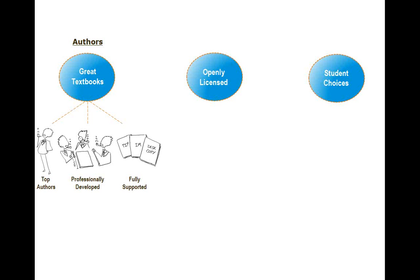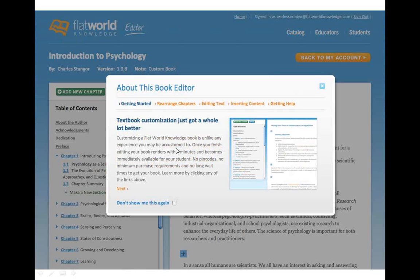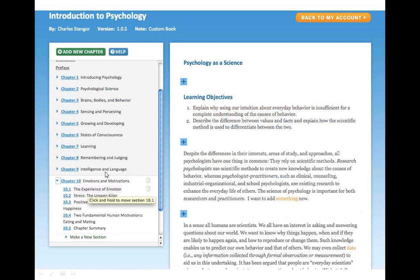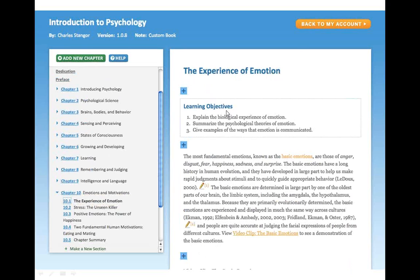But that's where our similarities to traditional publishers end. We publish our books under an open Creative Commons license, which allows instructors, if they choose, to customize our books — though they don't have to. They could always choose to use books as-is off the shelf. Simply by going to one of our catalog pages and clicking Customize a Book, you can move sections by dragging them, delete a section by clicking the little wastebasket, and go into the actual body of the text with our MEO publishing option — Make It Your Own — our custom platform. You can click on the plus sign and edit at the line level.